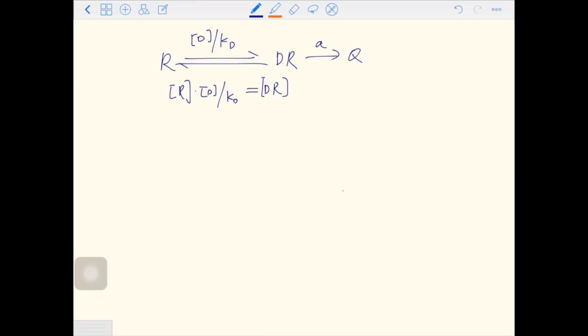So by rearranging it, we move DR to the left. We have R times D over DR equals, we move Kd, the denominator to the right. So we still have Kd, which is the dissociation constant equals R times D over DR.